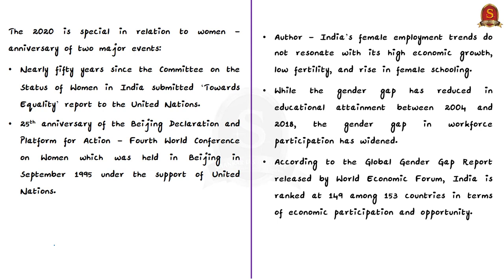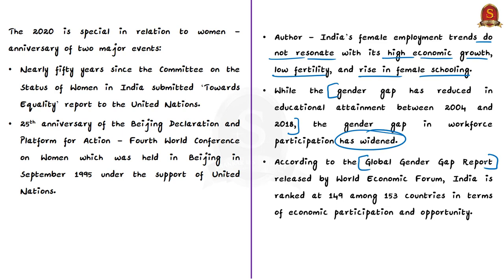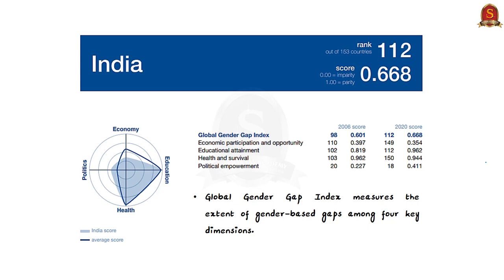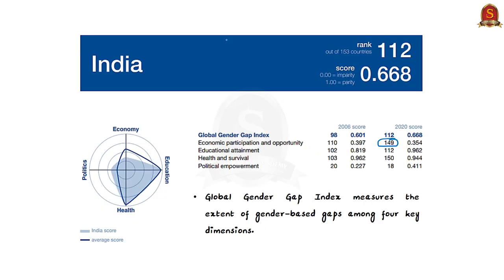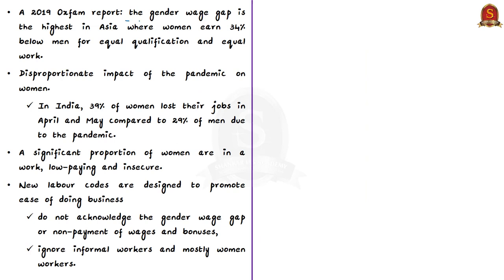The author states that India's female employment trends do not resonate with its high economic growth, low fertility and rise in female schooling. While the gender gap in educational attainment reduced between 2004 and 2018, the gender gap in workforce participation has widened. India has one of the lowest labour participation rates for women. According to the Global Gender Gap Report by the World Economic Forum, India is ranked 149 among 153 countries in economic participation and opportunity, which considers female participation in labour, wage equality, etc. The Global Gender Gap Index measures gaps across four dimensions: economic participation and opportunity, educational attainment, health and survival, and political empowerment. According to the 2019 Oxfam report, the gender wage gap is highest in Asia, where women earn 34% below men for equal qualification and equal work.